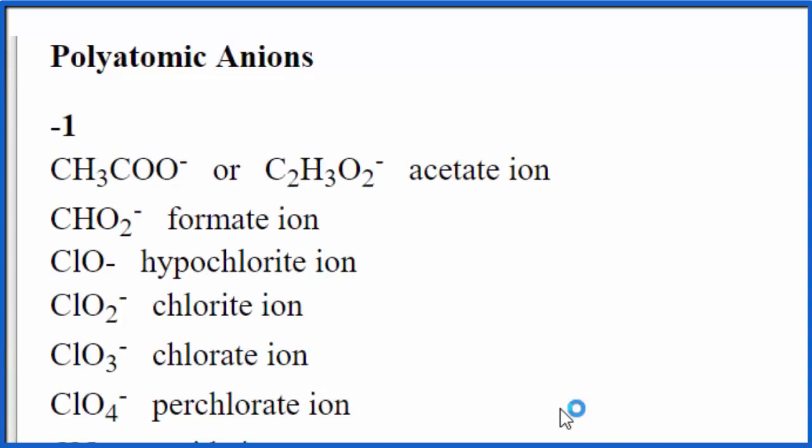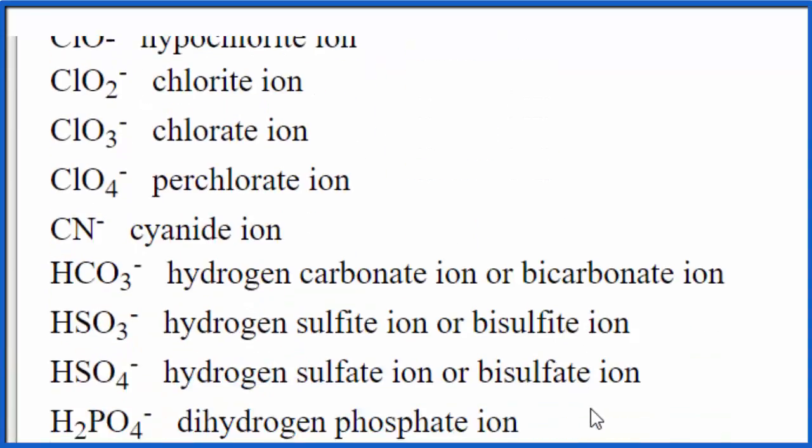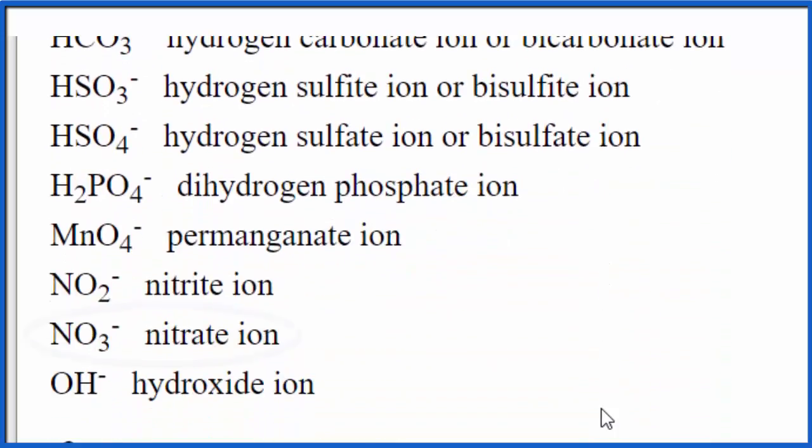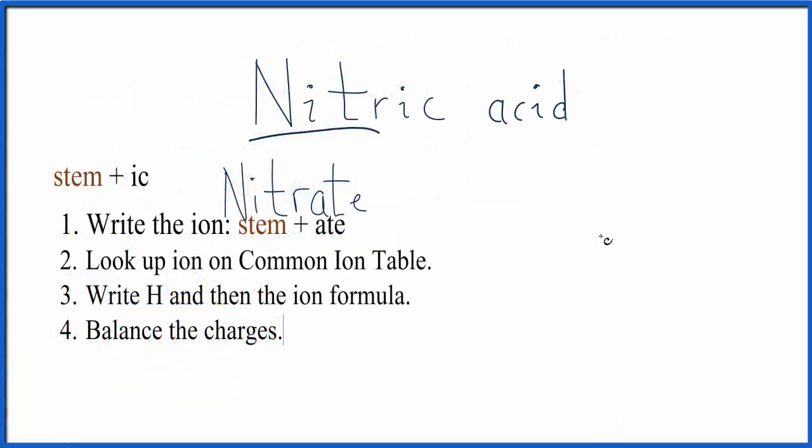So we scroll down, and we're looking for nitrates. We have chlorates down here, and there's nitrate. It's NO3 minus. So we remember NO3 minus. We go back to our table, and we'll write NO3 minus.